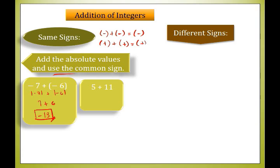Now let's have another example: positive 5 added by positive 11. Just as we perform addition of whole numbers, we add 5 and 11. Since they are both positive, the sum is positive 16.